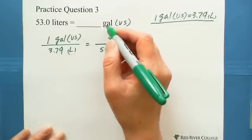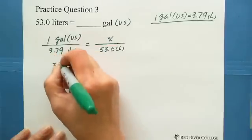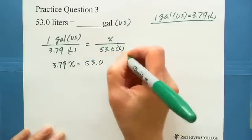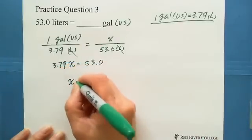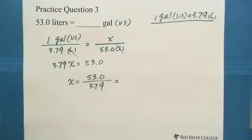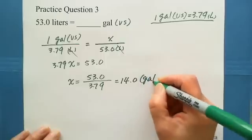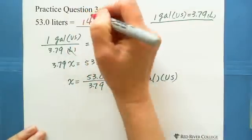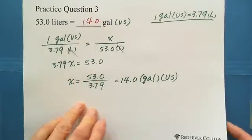So you're looking to convert to gallons. Gallon on the top and gallon on the top. Cross multiplication we have 3.79 times x equals 1 times 53, still equals 53.0. The liter liter cancel out. So divide 3.79 for both sides, you have x equals 53.0 over 3.79, and you got answer is 14.0 US gallons.